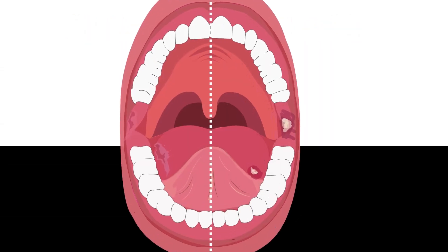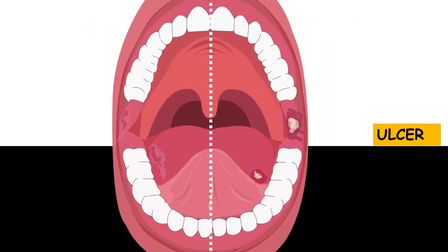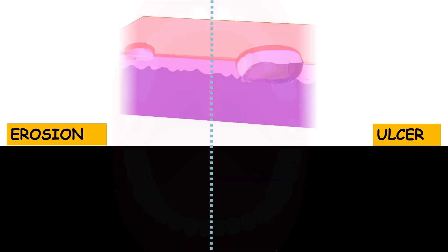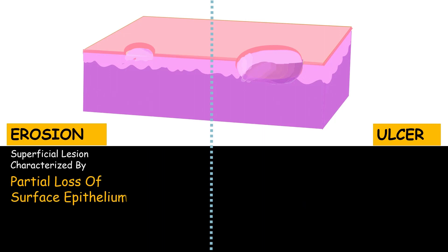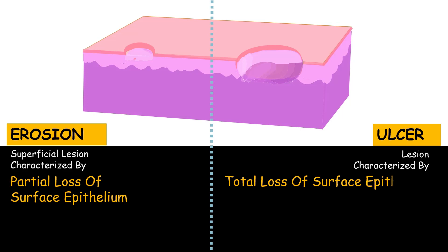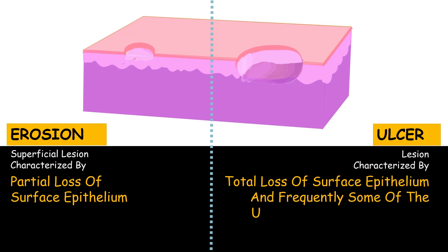The right side is showing an ulcer while the left displays an erosion. Erosion is a superficial lesion characterized by partial loss of surface epithelium, while an ulcer is a lesion characterized by total loss of surface epithelium and frequently some of the underlying connective tissue.